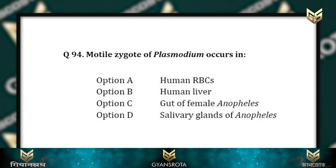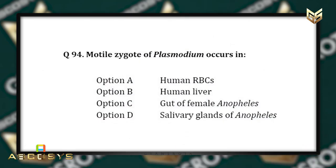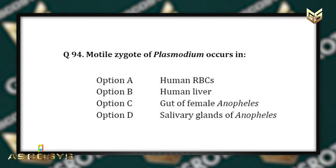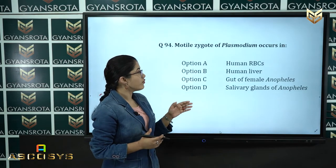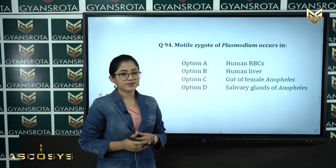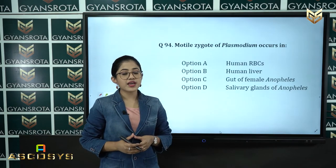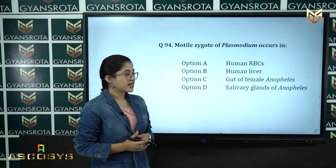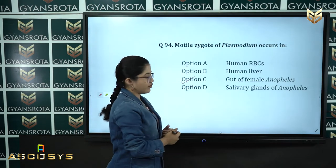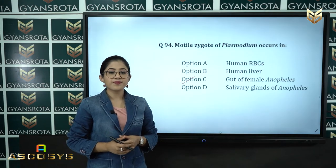Question number 94: Motile zygote of Plasmodium occurs in — Option A: human red blood cells, Option B: human liver, Option C: gut of female Anopheles, Option D: salivary glands of Anopheles. Based on the life cycle of Plasmodium discussed in human health and disease, the correct answer is option C — it occurs in the gut of female Anopheles.